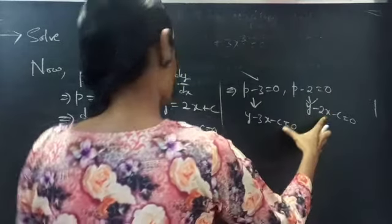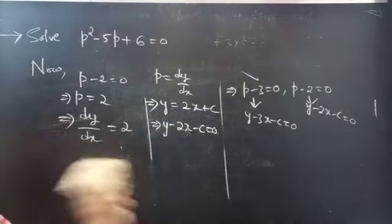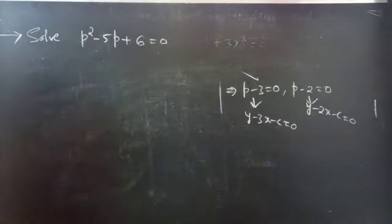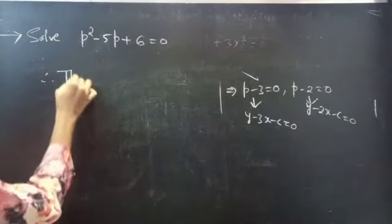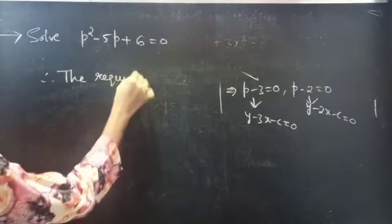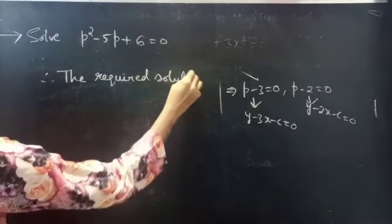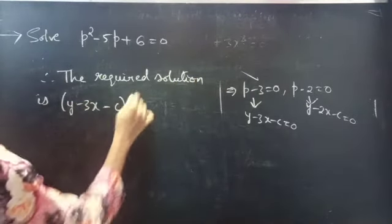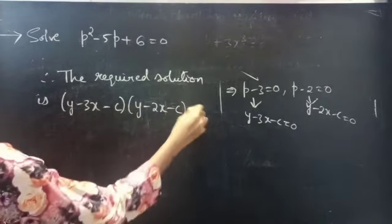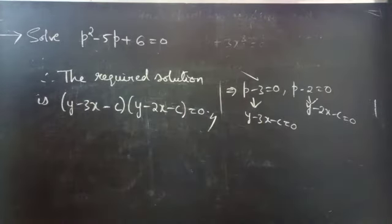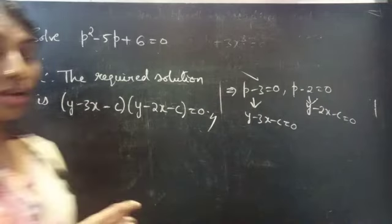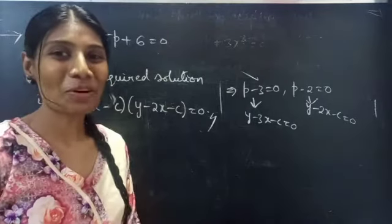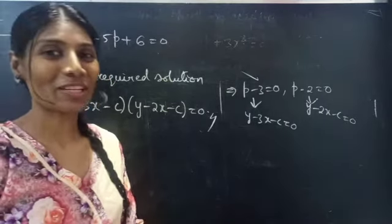So, the combined form of these two forms the solution of the given differential equation. The required solution is y minus 3x minus c into y minus 2x minus c equals to 0. So, we have seen a problem from Solvable for P in this video. Hope you'll understand. We'll see you in the next video, until then bye-bye.